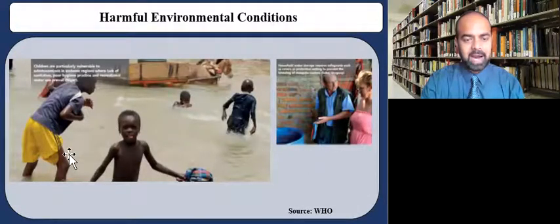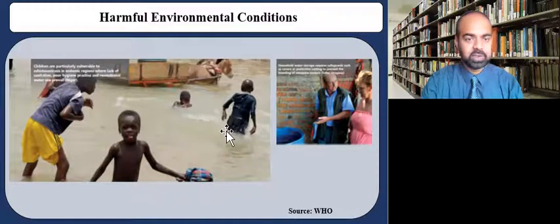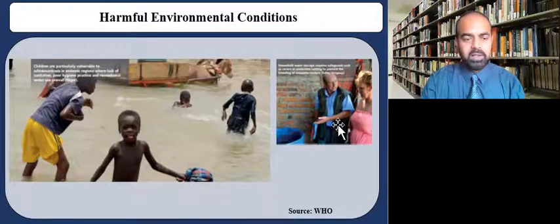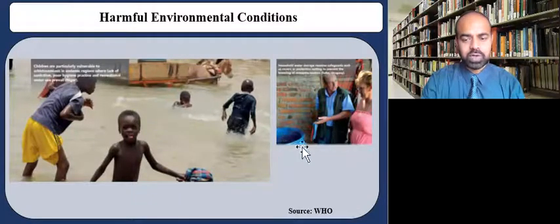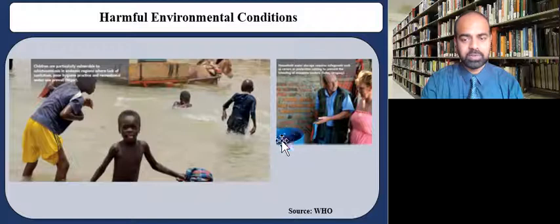In this image from Niger, Africa, children are playing in this flooded street. Children are particularly vulnerable to schistosomiasis, which is a waterborne disease related to lack of sanitation or hygiene practice and recreational water use. The figure to your right is from Uruguay in South America. Household water storage requires safeguards such as covers or protective netting to prevent the breeding of mosquito vectors, which carry a wide array of diseases such as malaria, Zika, and Dengue, to name a few.